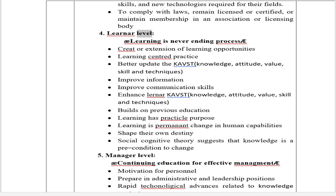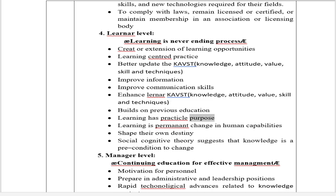4. Learner Level — E-learning is a never-ending process. It creates or extends learning opportunities through learning-centered practice. It helps update CAVST: knowledge, attitude, value, skill, and techniques. It improves information and communication skills, enhances learner capabilities, builds on previous education, and has practical purpose. Learning is a permanent change in human capabilities and helps shape one's own destiny. Social cognitive theory suggests that knowledge is a pre-condition to change.